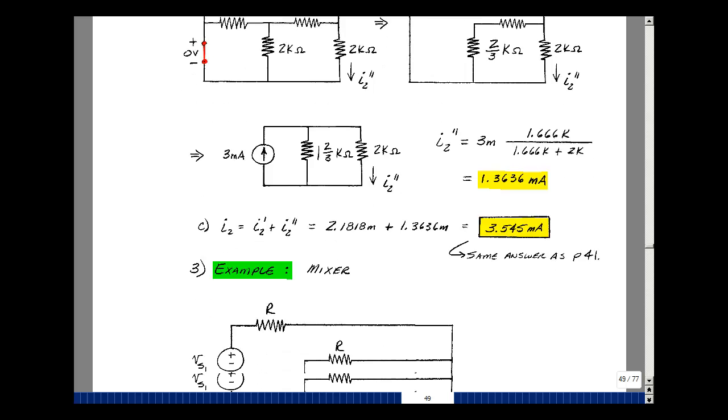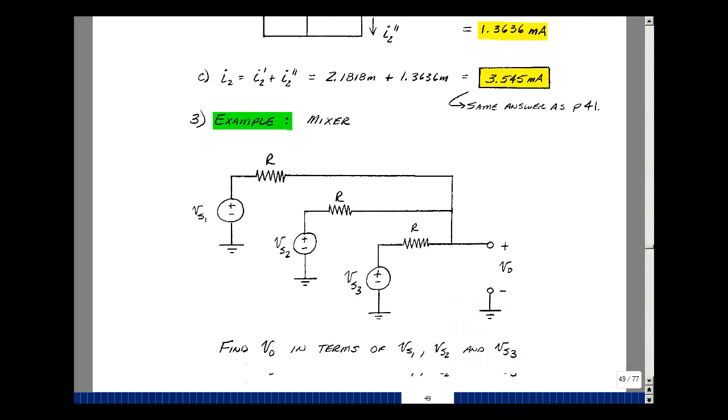Let's look at another example. This is called a mixer. Suppose that I have three inputs. These could be three microphones. Then I have the same resistance associated with each of those microphones. Connecting them together this way gets a very interesting result. So let's solve for Vout here in terms of the three inputs, Vs1, Vs2, and Vs3.